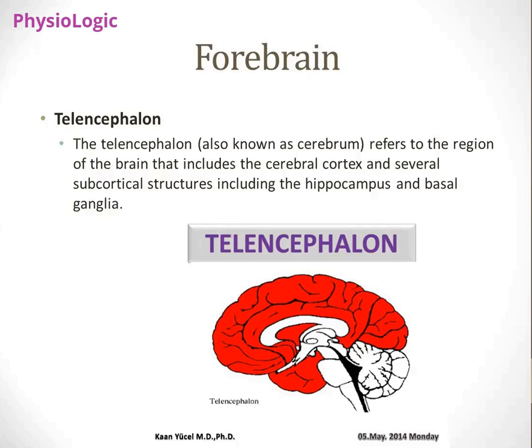We cannot say corpus callosum belongs to any particular division because it consists of fibers from different parts. There are commissural fibers, anterior fibers, and transverse fibers — these are white matter structures that serve the purpose of communication within the brain.